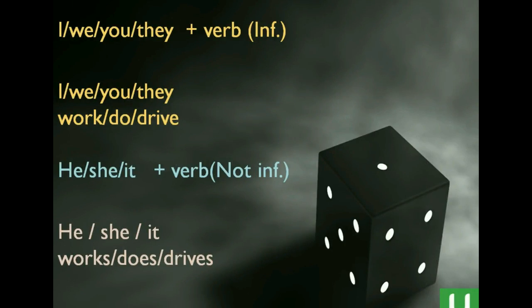What does it consist of? It consists of the subject pronouns: I, we, you, they — and the verb is infinitive. What I mean by that is it doesn't have S, or ES, or IES in the present simple.